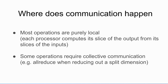Where is the communication going to happen? Most operations, just like data parallelism, will not require communication, because every processor will be operating on its own local slices. But some operations will require communication — particularly when you're doing a matrix multiply where the inner dimension is split, you'll end up doing an MPI all-reduce, just like in data parallelism when you compute the parameter gradients.